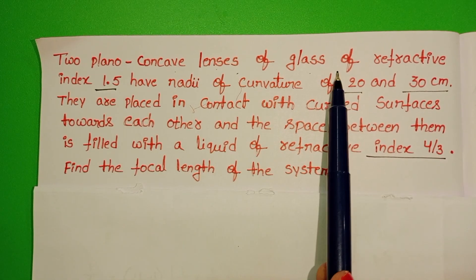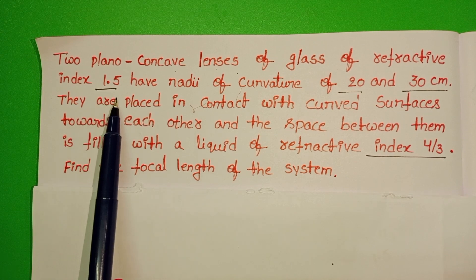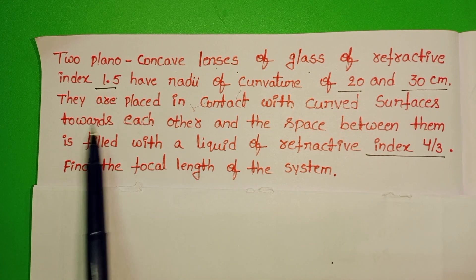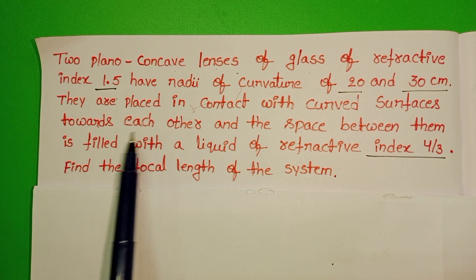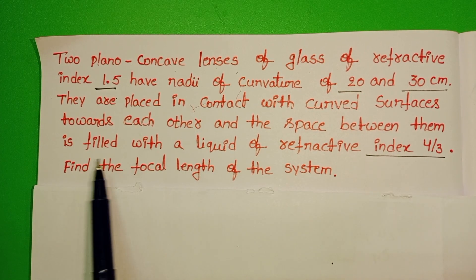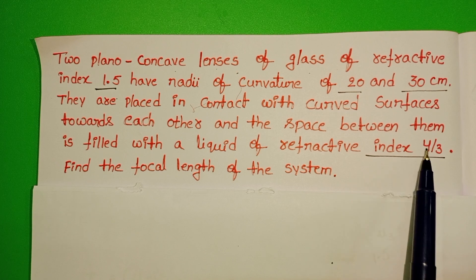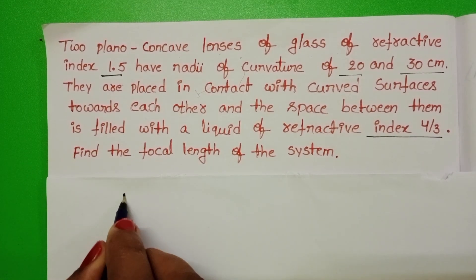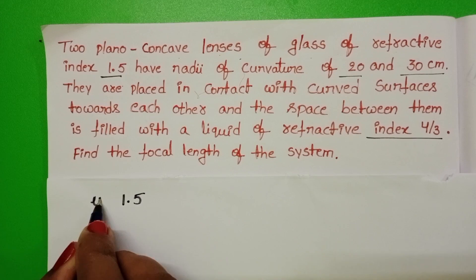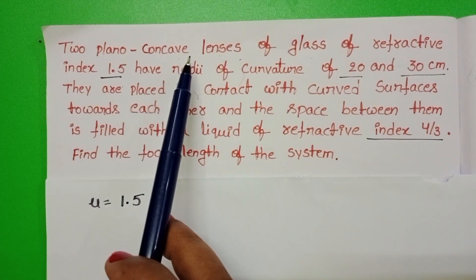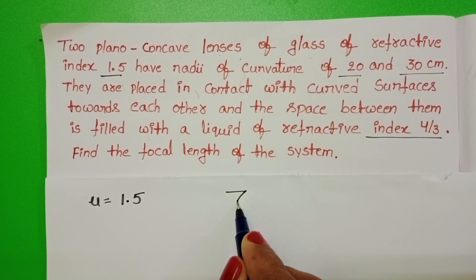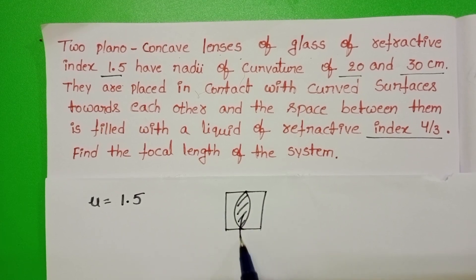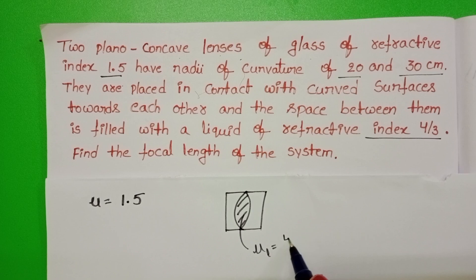Two plano-concave lenses, each of refractive index 1.5, have radii of curvature 20 cm and 30 cm. They are placed in contact with curved surfaces towards each other, and the space between them is filled with a liquid of refractive index 4/3.